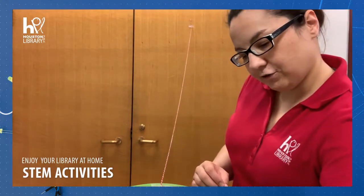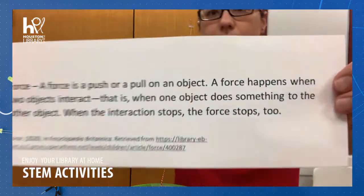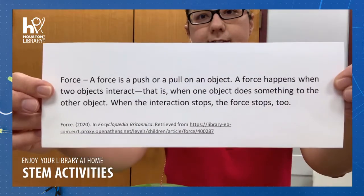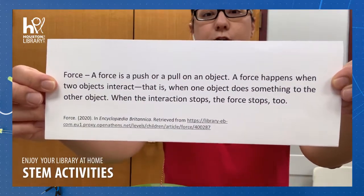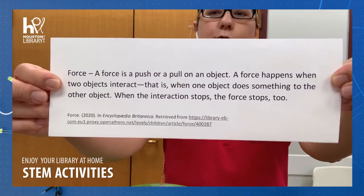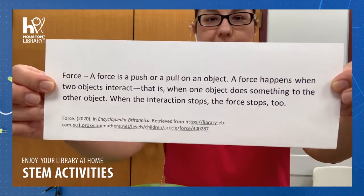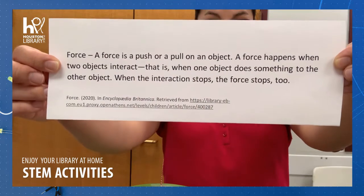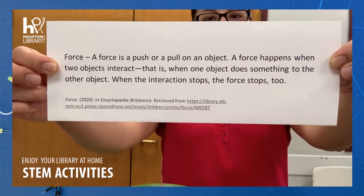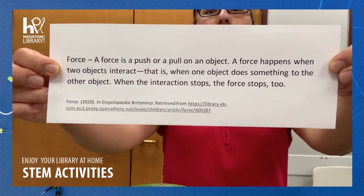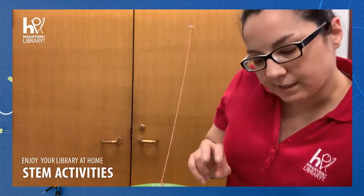For this activity we're going to need some help with some definitions. We're talking about forces. A force is a push or pull on an object. A force happens when two objects interact — when one object does something to the other — and when the interaction stops, the force stops too. We're mainly going to talk about two different types of forces: gravity and friction.